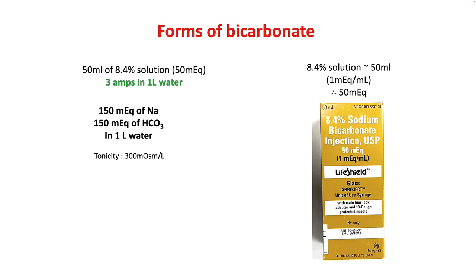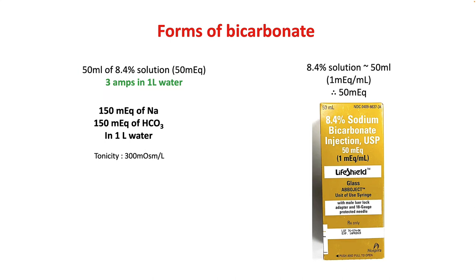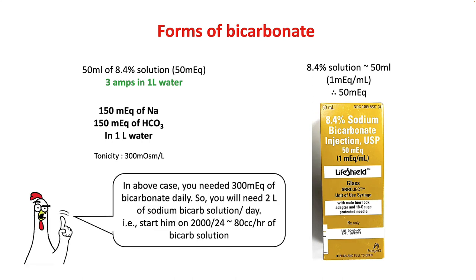To make an isotonic sodium bicarb solution, add 3 amps of 8.4% in 1 liter of water. Here you will get 150 mEq of sodium and 150 mEq of bicarb with an osmolality of 300 mOsm per liter. In the previous case, since you need 300 mEq of bicarb daily, you will need around 2 liters of sodium bicarb solution in a day. So if you start the patient at 80 cc per hour of bicarb solution, you should be able to achieve your target.